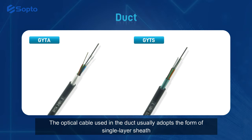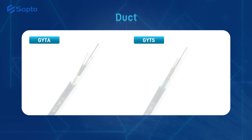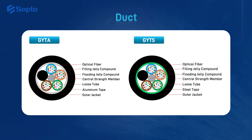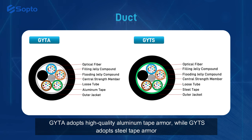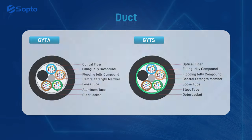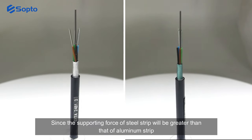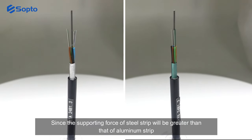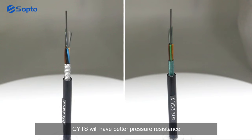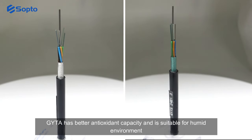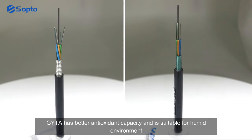The optical cable used in the duct usually adopts the form of single layer sheath. GYTA and GYTS are the most used. GYTA adopts high quality aluminum tape armor, while GYTS adopts steel tape armor. Since the supporting force of steel strip is greater than that of aluminum strip, GYTS has better pressure resistance, while GYTA has better antioxidant capacity and is suitable for humid environments.